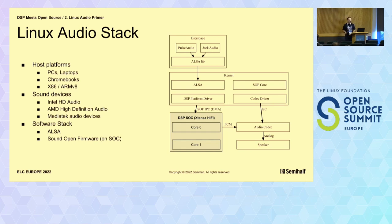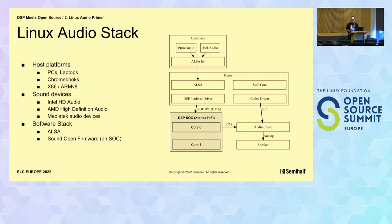If you want to play a sound, there's a user-space daemon responsible for it — either PulseAudio for regular audio like a movie or song, or JACK audio for low-latency processing. There's also an ALSA library in user space as an interface for ALSA syscalls, and in the kernel there's an ALSA subsystem plus other subsystems like DSP platform driver or codec driver. On the SoC or PCB board there's another chip with a DSP and audio codec that transforms digital audio to analog and vice versa.